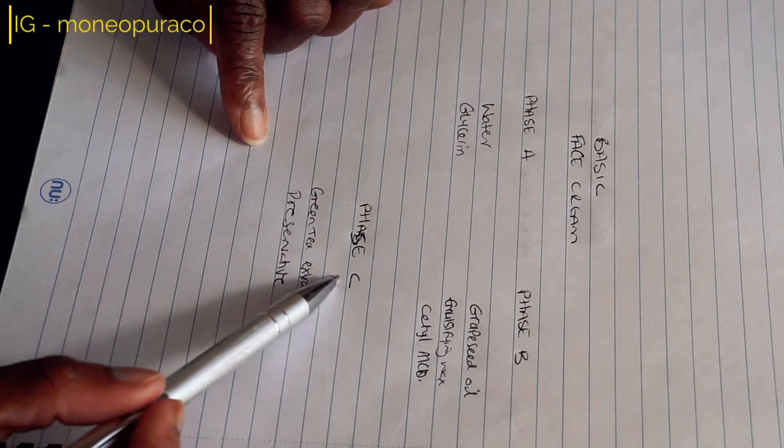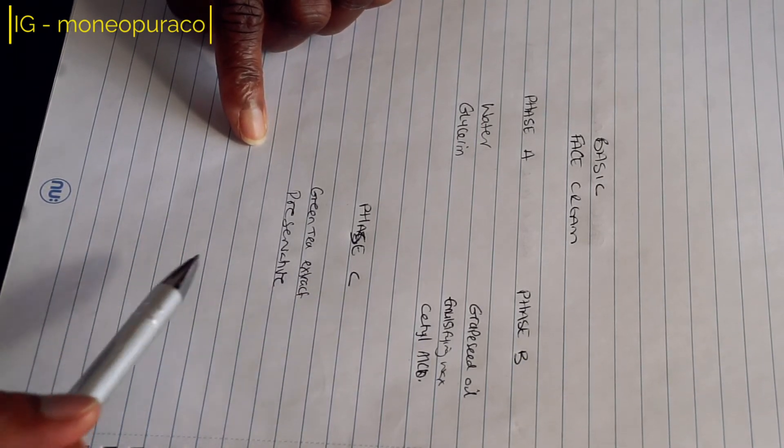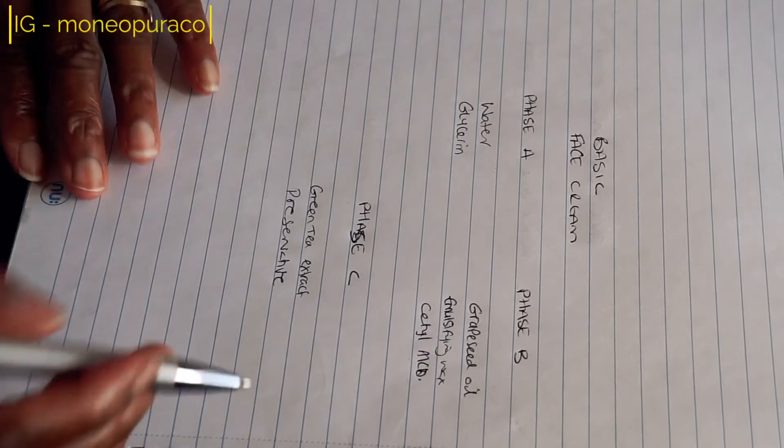Phase C is the cool down phase where we have our green tea extract and our preservative.